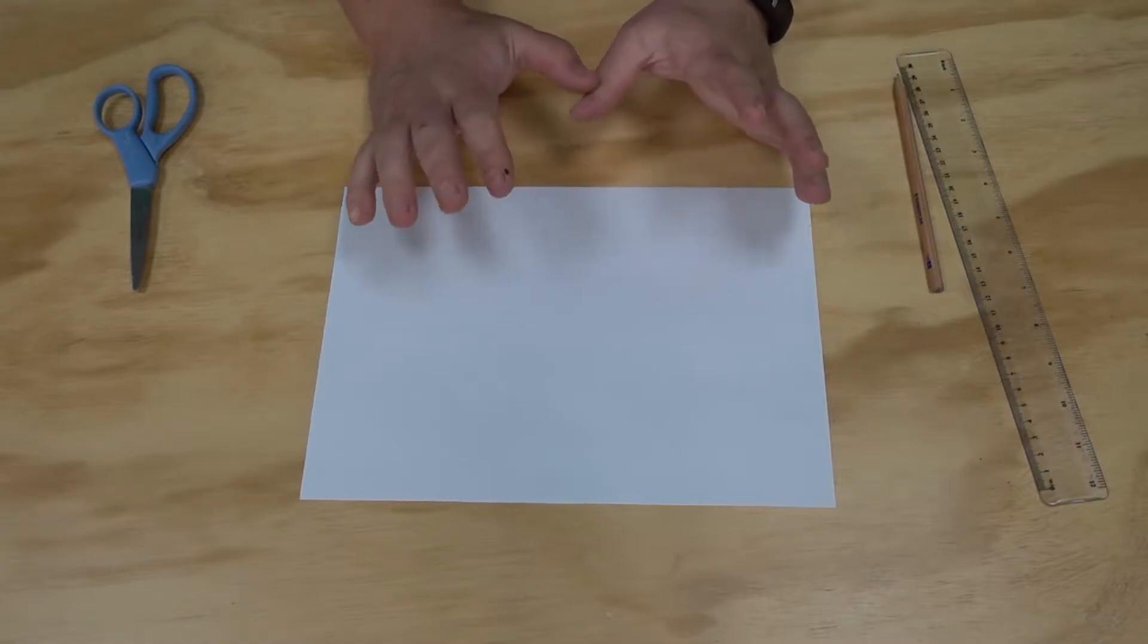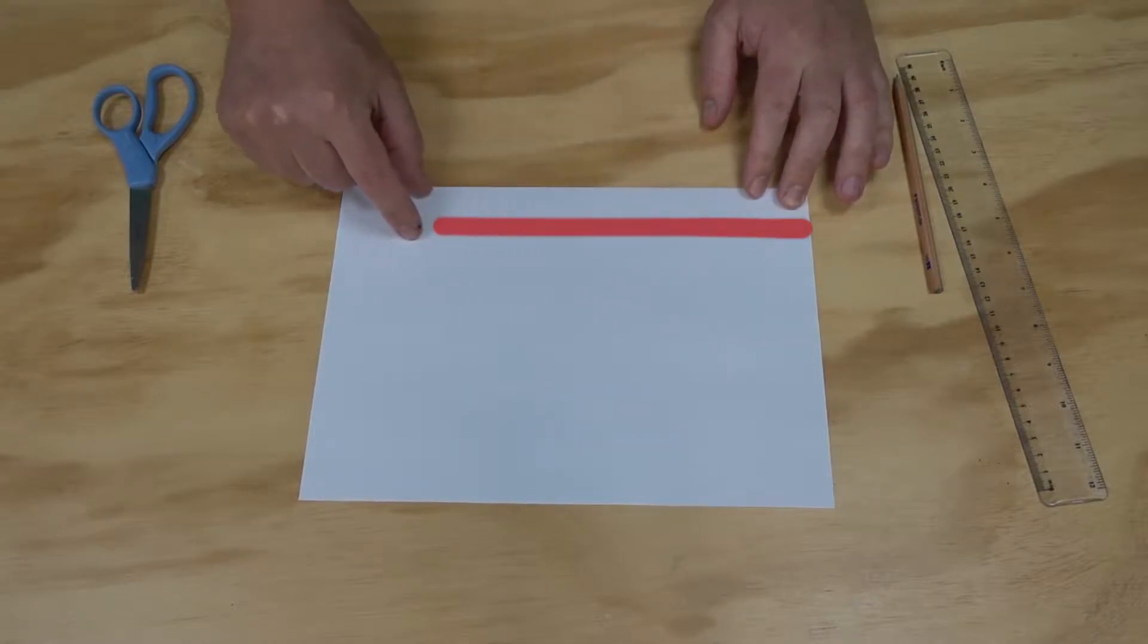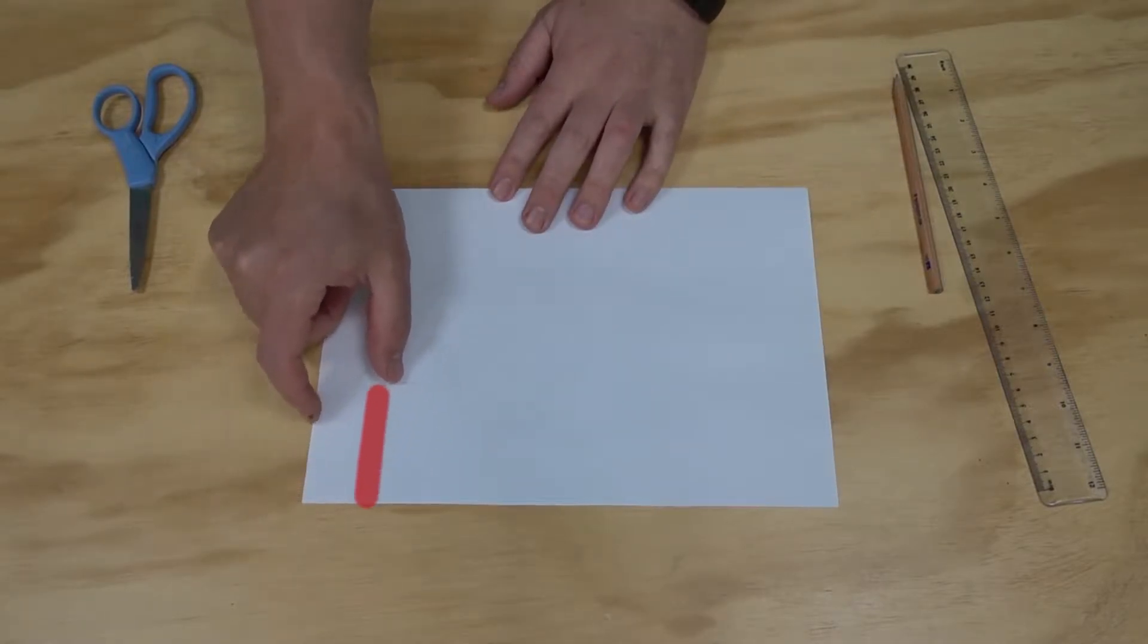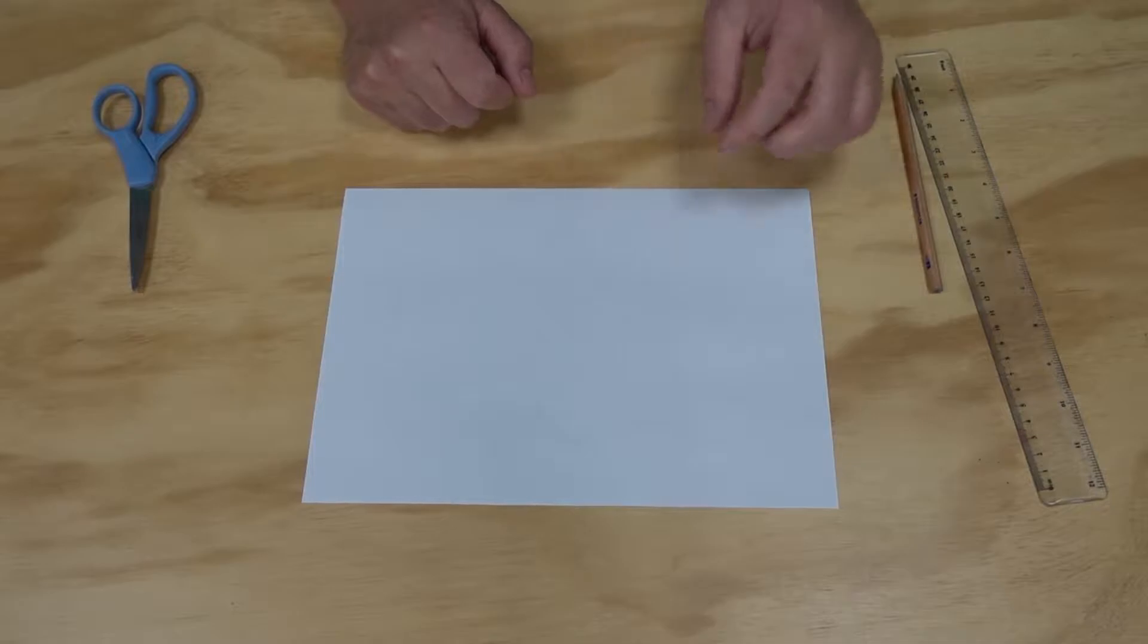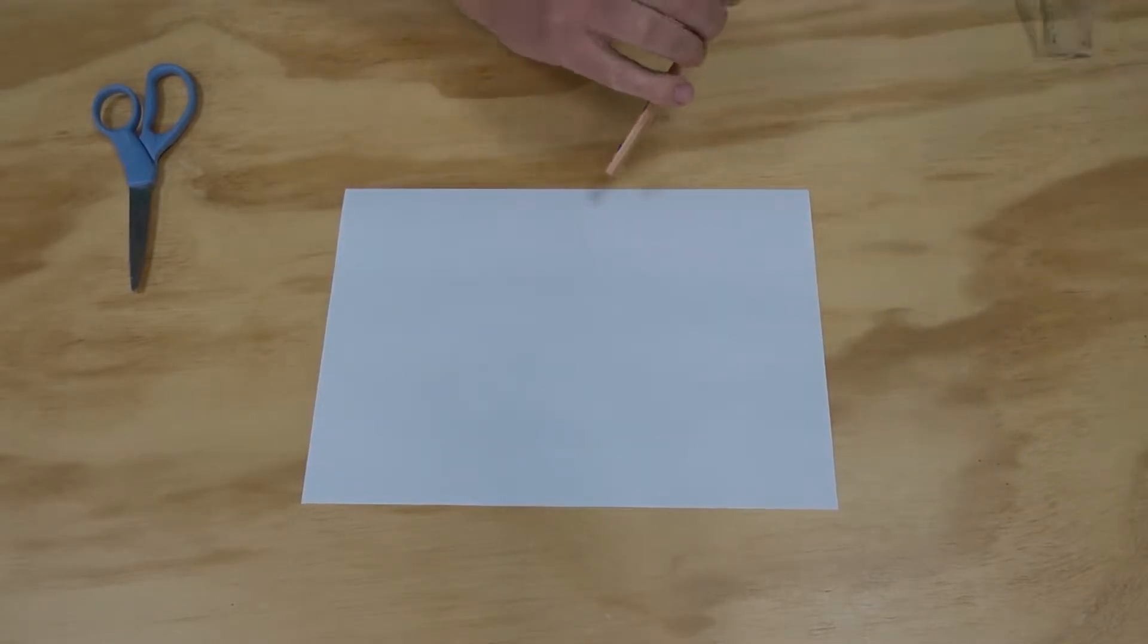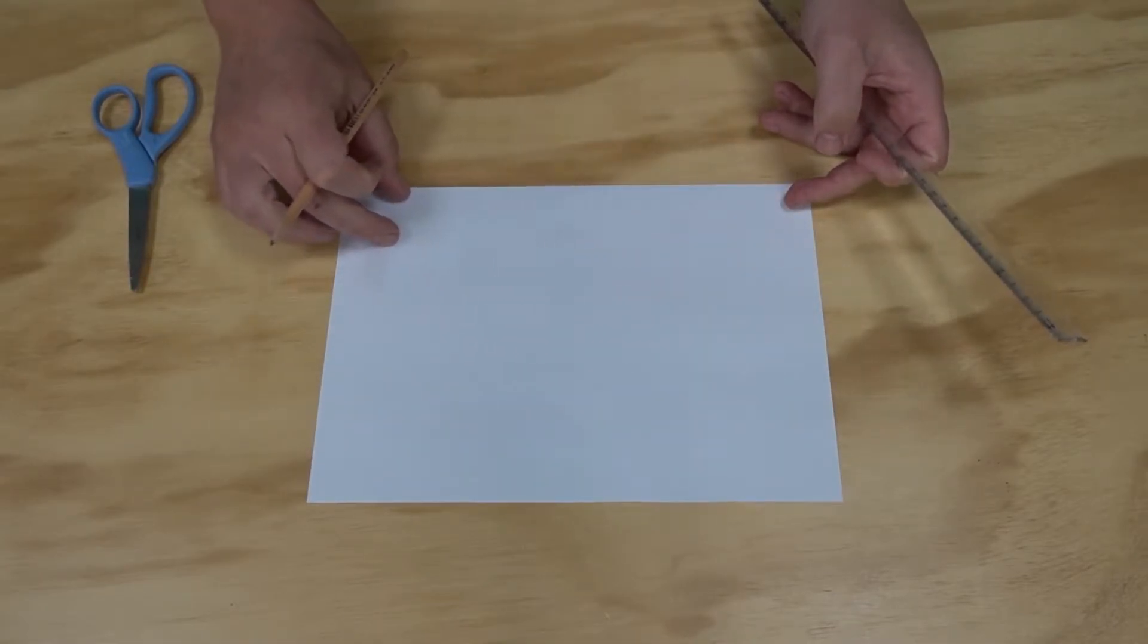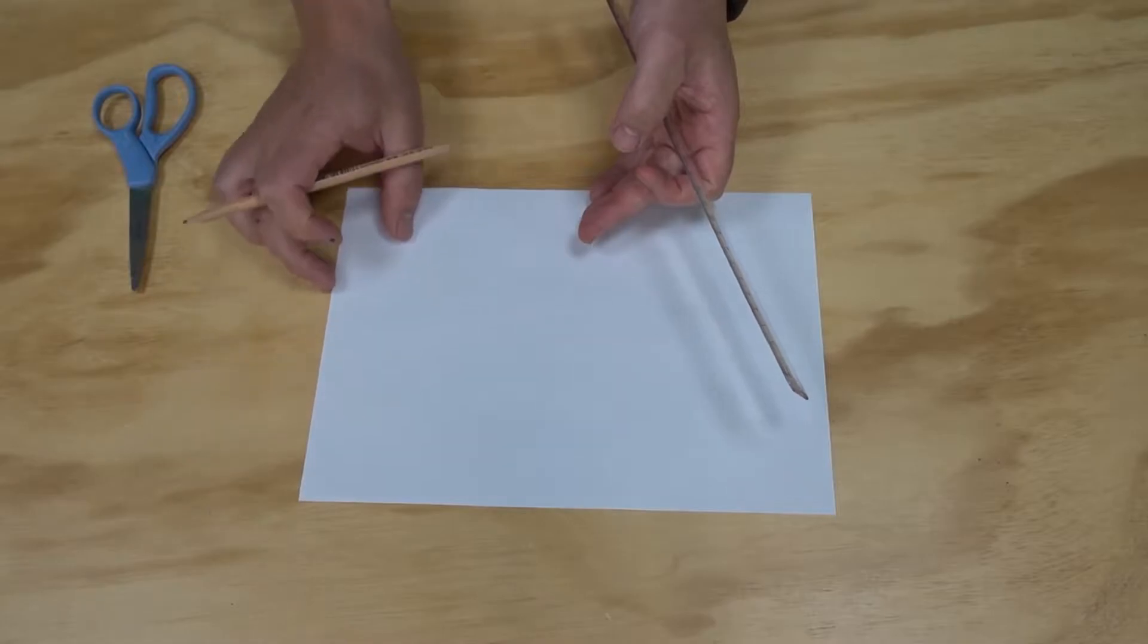The first flyer we're going to make is a hoop glider. For this, we need two different size hoops. To make these, I'm going to take one strip lengthways off the paper and one strip widthways. I'm going to make each strip about three centimeters wide. Using your ruler, pencil, and scissors, cut a three centimeter strip lengthways and a three centimeter strip widthways.